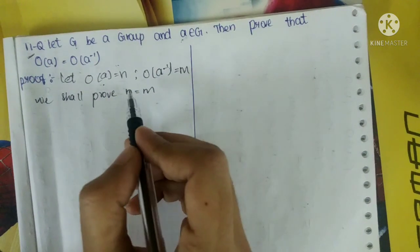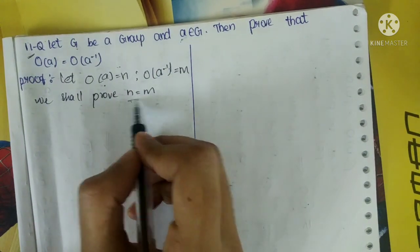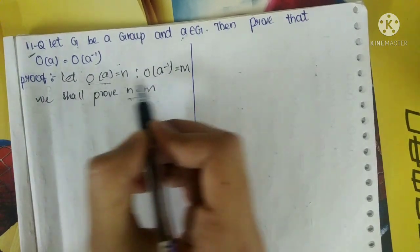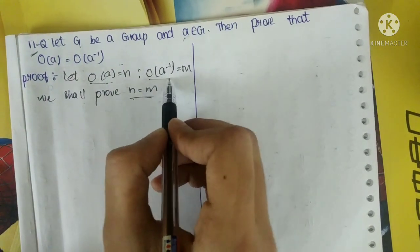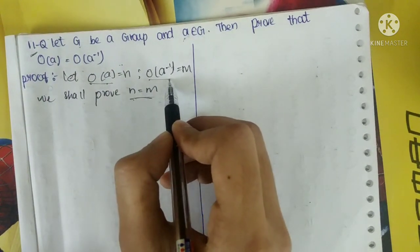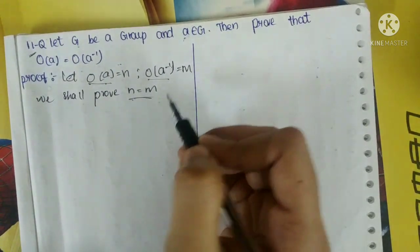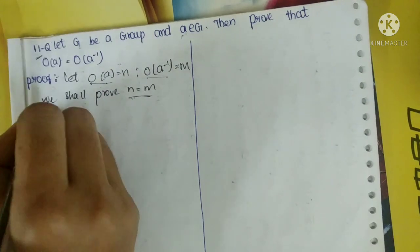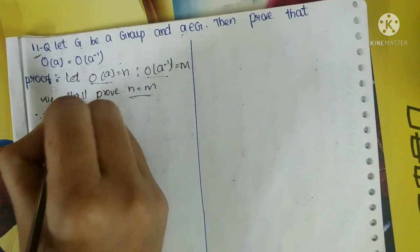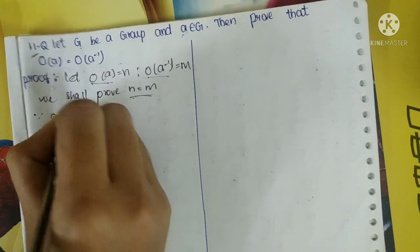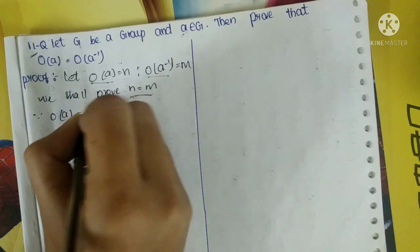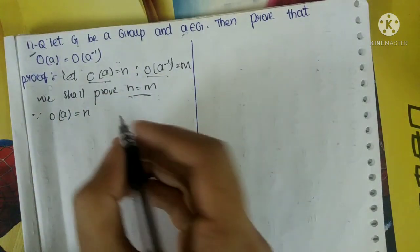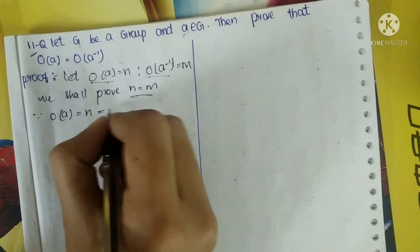So here we need to prove N is equal to M. Once we prove this, automatically O(A) = O(A⁻¹) will be proved. So therefore, O(A) = N which gives us A^N = E.